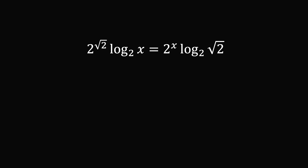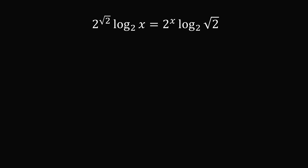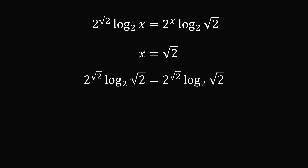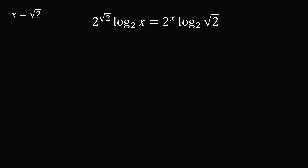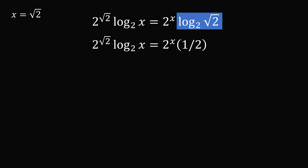Now let's analyze this equation. By simple inspection, if we substitute x equal to square root of 2, we get that both sides are equal to each other. So x equals square root of 2 is a solution. We've already figured out one value. Are there any others? We'll simplify the right-hand side where we have log base 2 of square root of 2. Square root of 2 can also be written as 2 to the power of one half, so this simplifies to be one half.